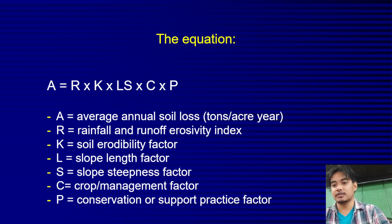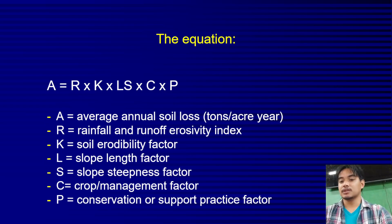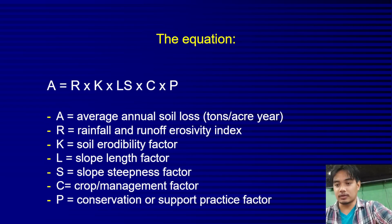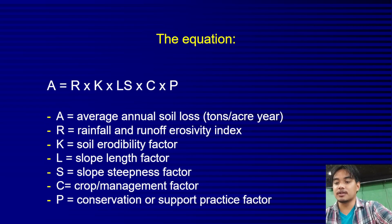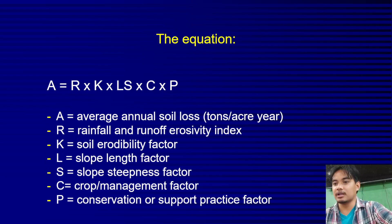The R factor is the rainfall and runoff erosivity index. The K factor is the soil erodibility factor. L is the slope length factor, S is the slope steepness factor, C is the crop management factor, and P is the conservation or support practice factor. All of these factors are used together to calculate the average annual soil loss.